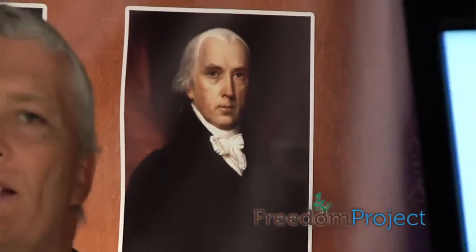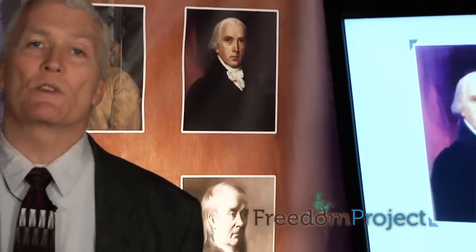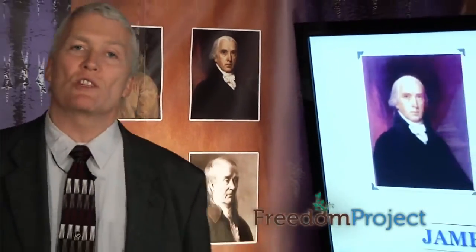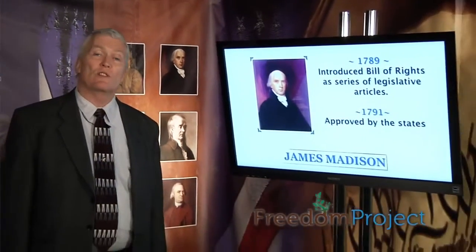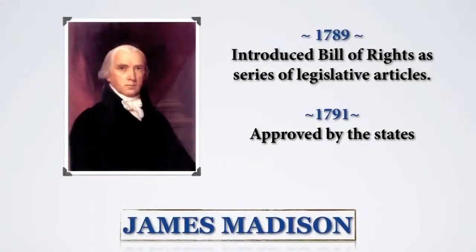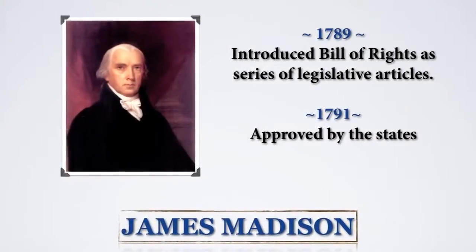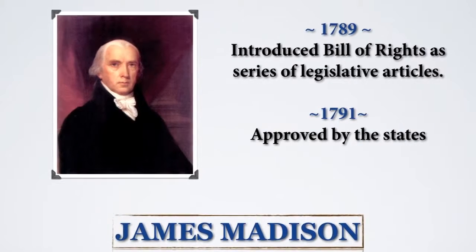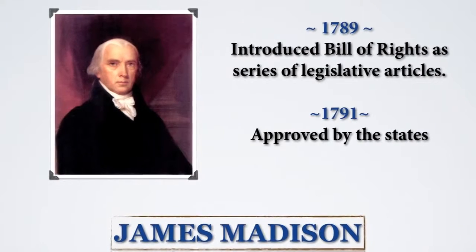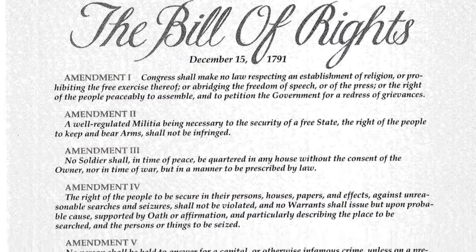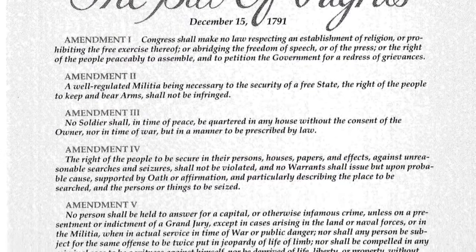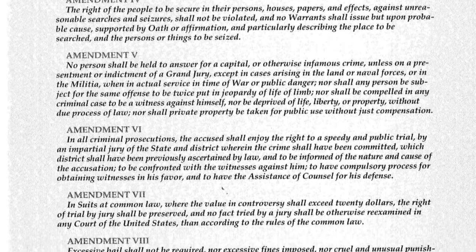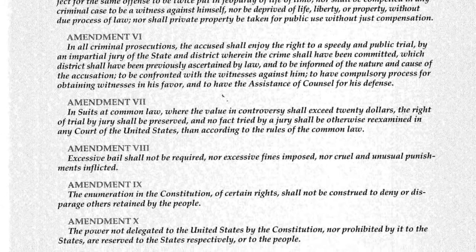It was in 1789 that the amendments were introduced as a series of legislative articles by our fourth president, James Madison. Two years later, in 1791, they were approved by 75 percent of the states and became the first ten amendments. The Bill of Rights was designed to protect the natural rights of all Americans and to set limits on what the government can and can't do in regards to personal freedoms.